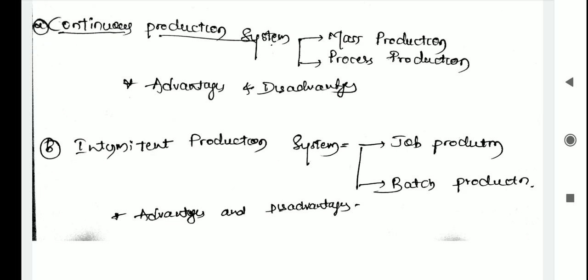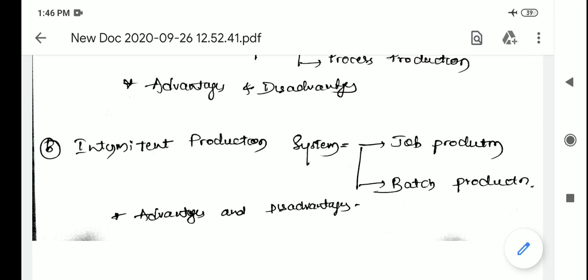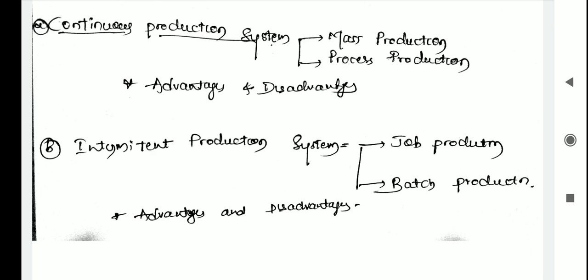There are two types of production systems. The first one is continuous production system and the second one is intermittent. In case of continuous production system, there are two types: first is mass production and second is process production. In case of intermittent production system, there are also two types: job order production and batch production. First, we'll discuss the continuous production system.